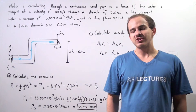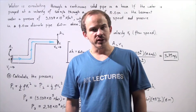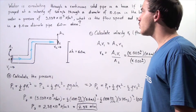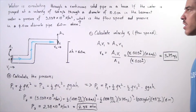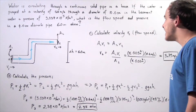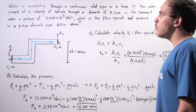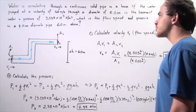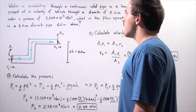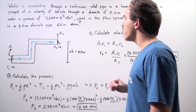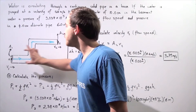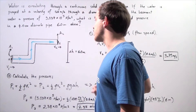In this example, we're going to use the equation of continuity as well as Bernoulli's equation to solve the following problem. Water is circulating through a continuous solid pipe in a house. The water is pumped at a velocity of 0.6 meters per second through a diameter of 10 centimeters in the basement under a pressure of 3.039 times 10 to the 5 newtons per meter squared. We want to find the flow speed and pressure in a 4 centimeter diameter pipe 6 meters above the basement pipe. We label the basement section as pipe section 1 and the upper section as pipe section 2.